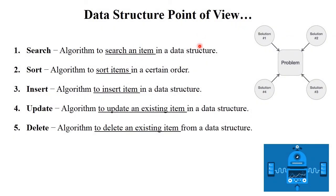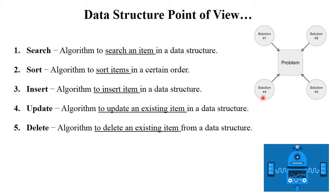Now, from a data structure point of view, there are different algorithms. There is a search algorithm — to search an item in a data structure. Sort algorithm — for sorting items in a data structure. Insert algorithm — for inserting items into a data structure one by one. Update algorithm — to update an existing item in a data structure. Delete algorithm — to delete an existing item in a data structure. So searching, sorting, insert, update, and delete — these kinds of algorithms we implement in data structures. For one problem, we can provide different types of solutions — solution 1, 2, 3, 4 — and these solutions are considered as algorithms.